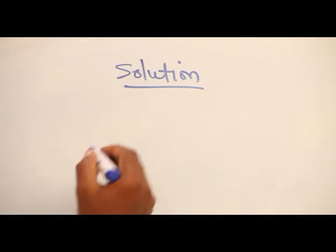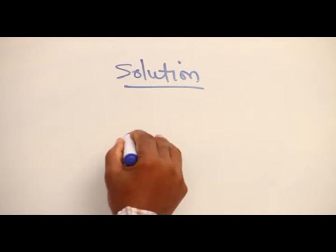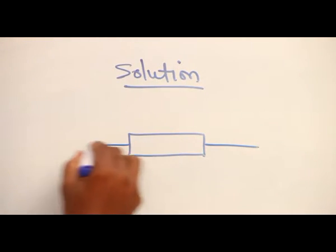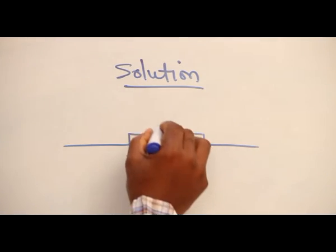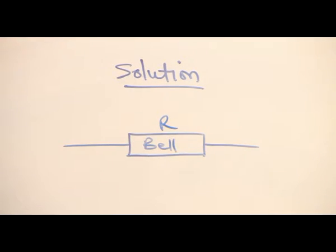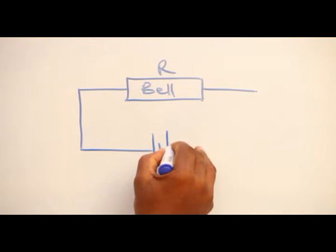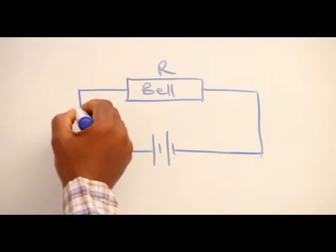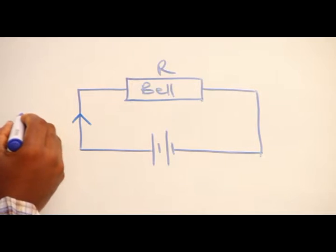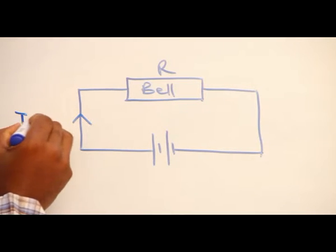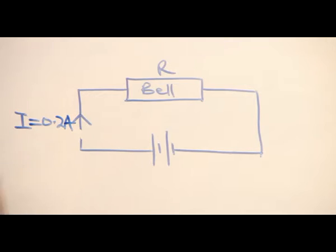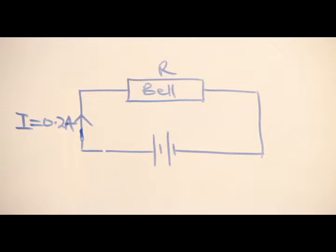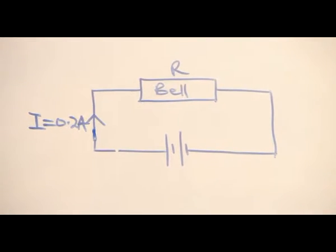the two cells were arranged in series. Now we have our bell represented by this resistor symbol. This is the bell of resistance R, cell 1, cell 2. We are told that the current going to the bell I is 0.2 ampere. We are expected to get the resistance of the bell.